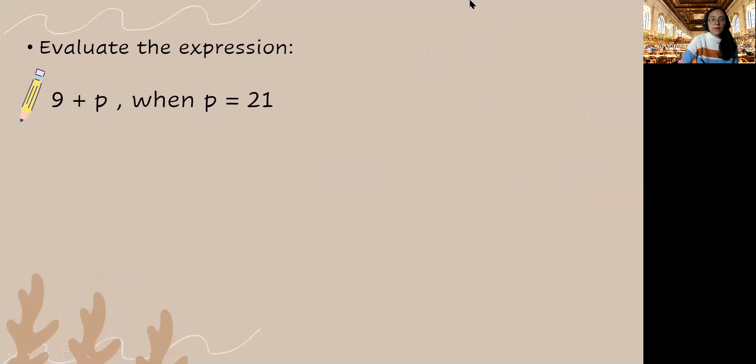Our first problem asks us to evaluate 9 plus p when p is equal to 21. So what do you recall from the section that we learned about substitution and variables? We're going to substitute 21 wherever we see p. So 9 plus 21, we perform our operation and this is 30. Okay, simple enough.